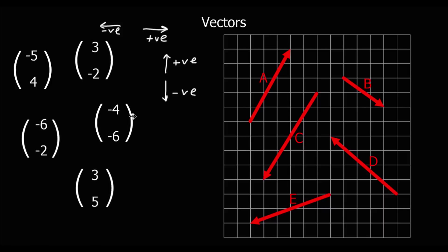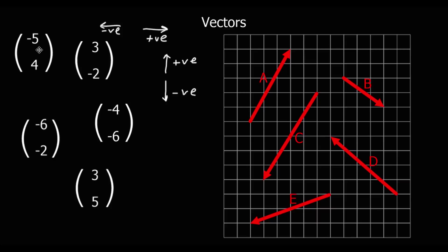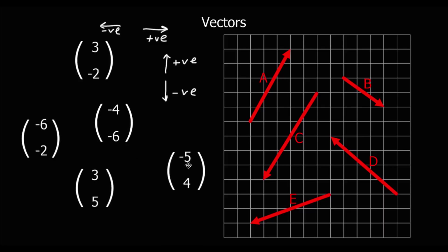Let's pick one of these column vectors — minus five, four. The top number is movement in the x direction, so it's going back five — five to the left. The second number is movement in the y direction and it's positive, so it's up four. That means this vector is five left, four up. So which of these vectors goes five to the left and four up?